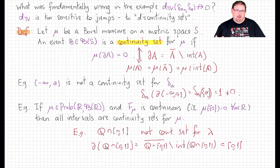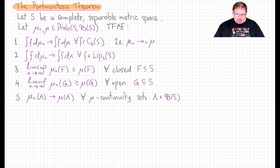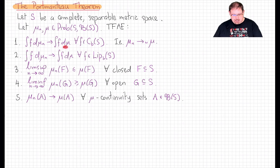With that in hand, we can start to look at set-wise equivalences of weak convergence. Our next theorem — one of the major theorems about weak convergence — is called the Portmanteau theorem. If we have a complete separable metric space, like Euclidean space, and we have a sequence of Borel probability measures together with a putative limit Borel probability measure, then the following conditions are equivalent. The first is that mu_n converges weakly to mu by our definition: testing against continuous bounded functions gives convergence of integrals.